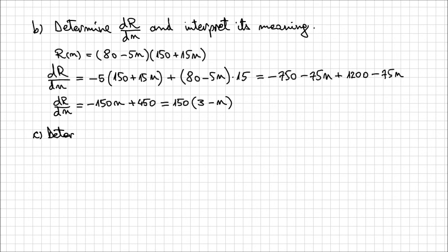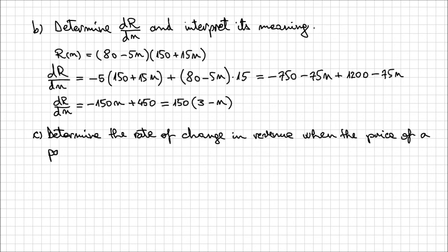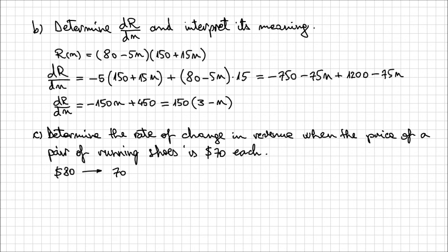At point C, we need to determine the rate of change in revenue when the price of a pair of running shoes is $70 each. The initial price was $80, so for the price to be $70, that's a difference of $10. We can evaluate this $10 price decrease as n times a $5 price decrease, which is the increment of price decreases.